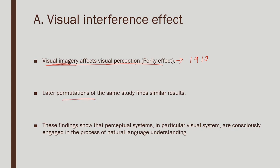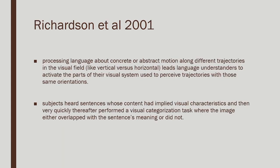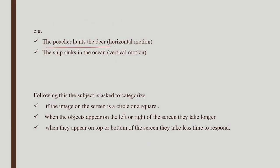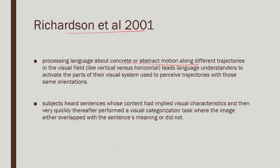These findings show that the perceptual system — in particular the visual system — is consciously engaged in the process of natural language processing. In this regard there is a famous study by Richardson et al. (2001). They showed that language processing — about concrete or abstract motion along different trajectories in the visual field — has perceptual implications. You can depict motion in a concrete sentence like 'the poacher hunts the deer' or 'the sheep sinks in the ocean.' These sentences simulate a scenario with movement along the horizontal or vertical plane.